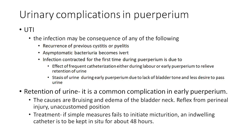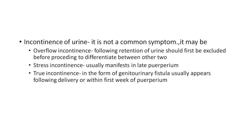Urinary complications in the puerperium — first is urinary tract infection, which may result from recurrence of previous bacteriuria, asymptomatic bacteriuria becoming symptomatic, or infection contracted for the first time during the puerperium due to frequent catheterization during labor or early puerperium to relieve urinary retention. Retention of urine is one of the common complications in early puerperium, caused by bruising and edema of the bladder neck, reflex from perineal injury, and unaccustomed position. If simple measures fail, an indwelling catheter is kept in situ for 48 hours. Stress incontinence usually manifests in late puerperium, while true incontinence in the form of a genitourinary fistula usually appears following delivery or within the first week of the puerperium.